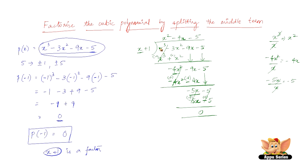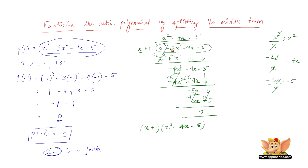So now we have (x + 1) times (x² - 4x - 5). When we multiply these two, we get back the original expression. Therefore, x³ - 3x² - 9x - 5 can be written in factorized form as (x + 1)(x² - 4x - 5).